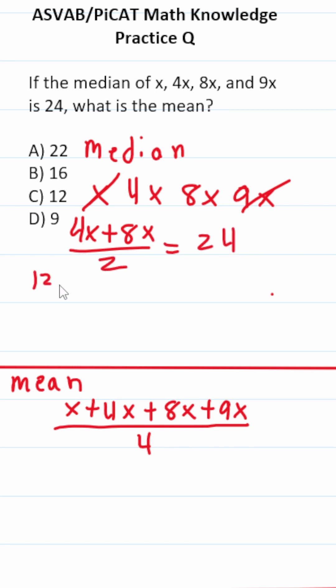so this becomes 12x over 2 equals 24. We're going to solve for x, multiply both sides by 2. This crosses out, this becomes 12x equals 48. Divide both sides by 12. This says x equals 4.